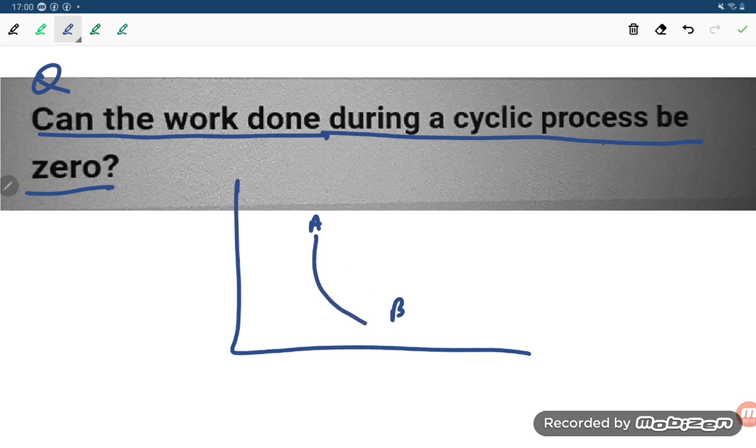So A is converting to B, and immediately B is converting to A. This is a pressure-volume graph, student. Can the work done during this, if the similar condition is there, everything is same...